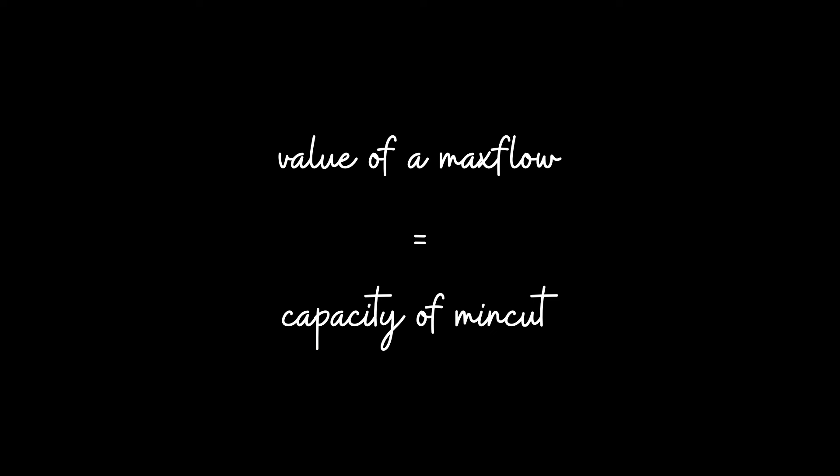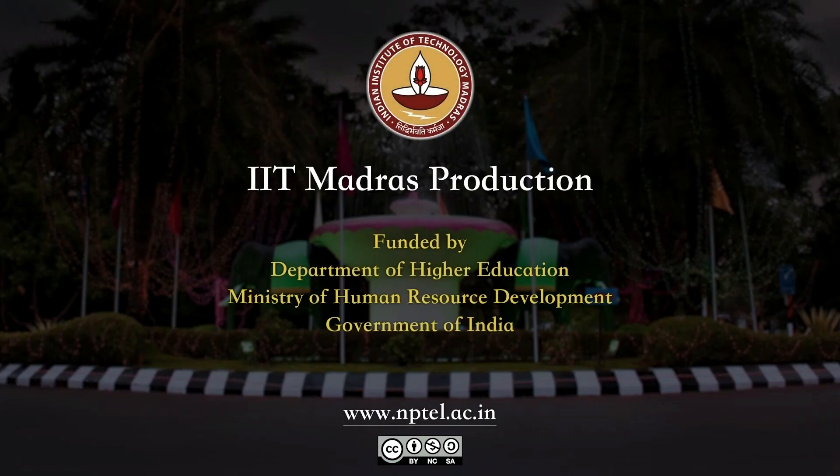We will see one example of such a duality in the last module this week. In the meantime, we'll talk about how to implement the process of finding a minimum cut. Since you have already implemented the max flow algorithm, this turns out to be very easy. We'll see this in the context of a specific problem in the next module.